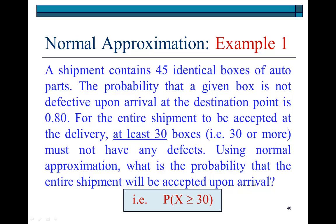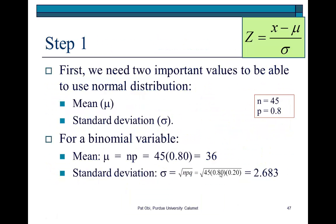Now, keep in mind that for a shipment to be accepted on arrival, the probability of success has to be at least 30 or more, meaning that 30 or more boxes cannot have any defects on them. So, with that in mind, the first step here is to first obtain the parameter estimates for the mean and standard deviation. Because, if we have to use normal approximation, we are required to calculate z, and z requires us to know the mean and standard deviation.